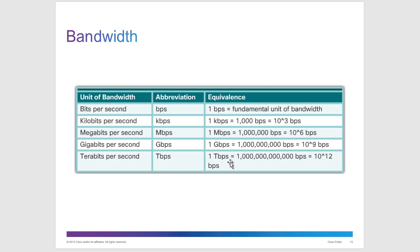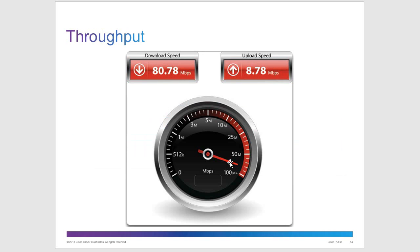Bandwidth is the potential speed of your cabling and devices under optimal conditions. Throughput is the actual speed you get over a period of time. For example, you might be supposed to have a 100 megabit connection but only get 80 megabits per second due to interference or sharing a line. If you want to test your throughput at home, type in 'speed test' or 'internet speed test' — you'll likely find the Ookla site, which will show you your actual throughput.